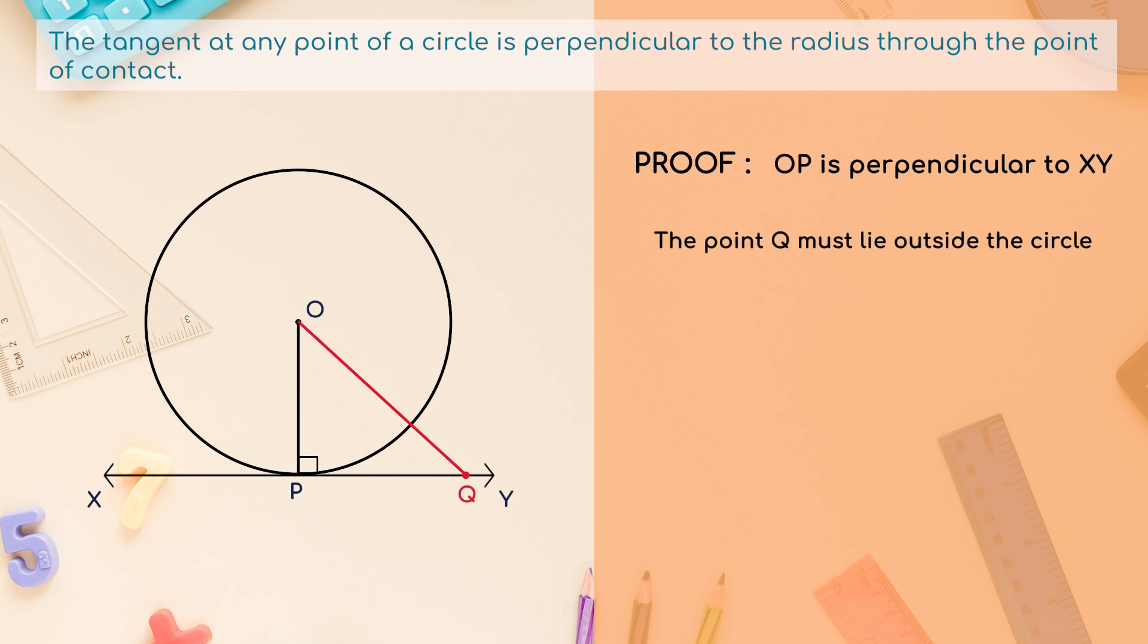Why? Note that if Q lies inside the circle, XY will become a secant and not a tangent to the circle. Therefore, OQ is longer than the radius OP of the circle. That is, OQ is greater than OP. Since this happens for every point on the line XY except the point P, OP is the shortest of all the distances of the point O to the points of XY. So, OP is perpendicular to XY.